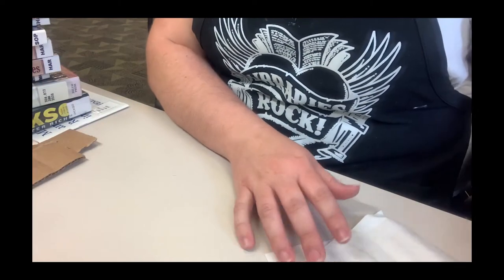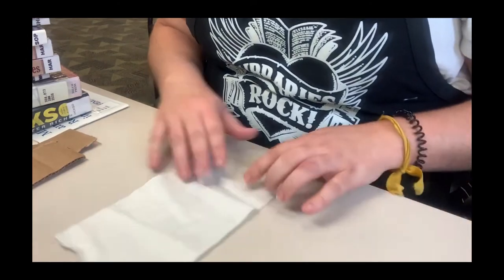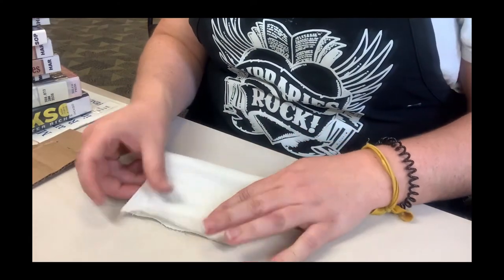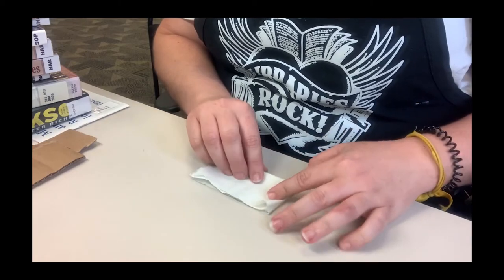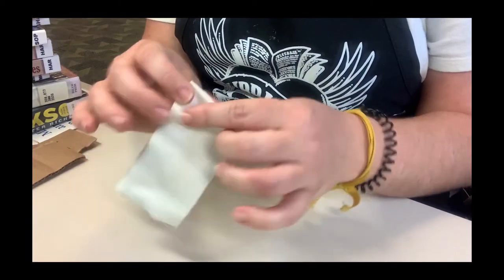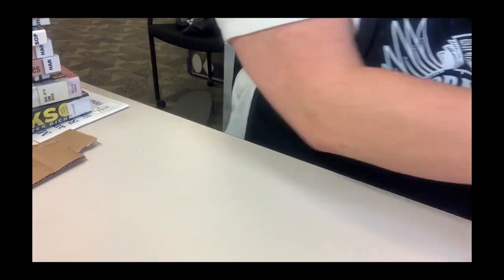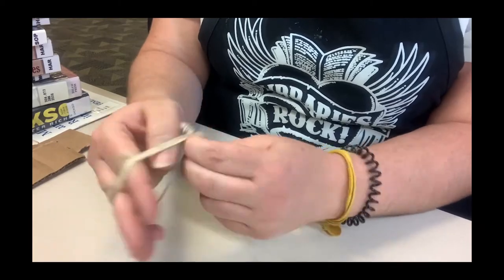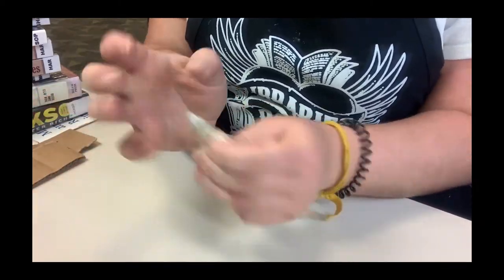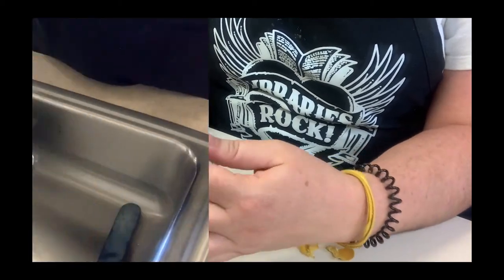I'll show you another technique. This one's pretty simple. I'm going to fold in half, fold in half again, and then I'm going to put rubber bands along the edge here.